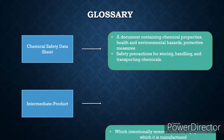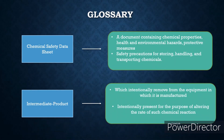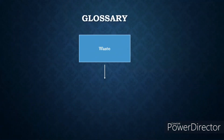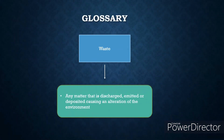Then, intermediate product, which is intentionally removed from the equipment in which it is manufactured, thereby altering the rate of a chemical reaction. The last term is waste: any matter that is discharged, emitted, or deposited causing an alteration of the environment.